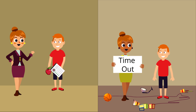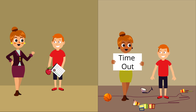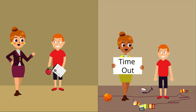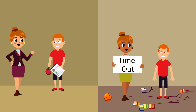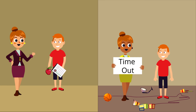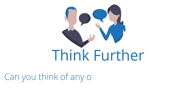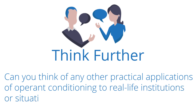Many employees in the education system are taught techniques based on operant conditioning to help discipline unruly students, as well as children with special needs who may have difficulty following instructions and developing control over their verbal and motor skills. Similar operant conditioning tactics are sometimes employed in prisons or rehabilitation centers to help break cycles of negative behavior and encourage new healthy habits. Can you think of any other practical applications of operant conditioning to real-life institutions or situations?